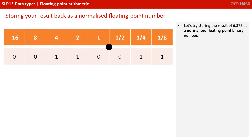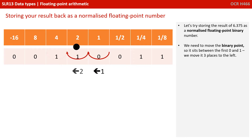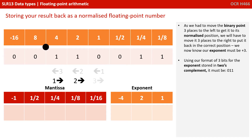Let's try storing this result — which was 6.375 — back as a normalised floating point binary number. That's also something you might be asked to do in the exam: perform this calculation and store the result back in the format you started with. We need to move the binary point so it sits between the first 0 and 1, so we have to move it three places to the left. Since we moved the binary point three places to the left to normalise it, we'll need to move it three places to the right to restore the correct position, giving us an exponent of plus three. Using our format of three bits for the exponent stored in two's complement, that's 0, 1, 1.